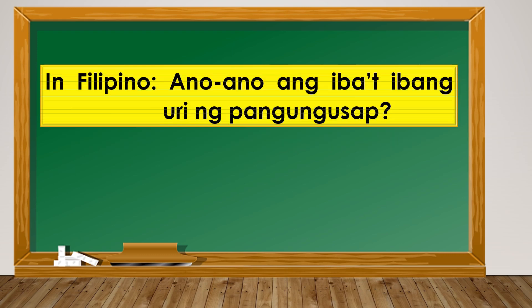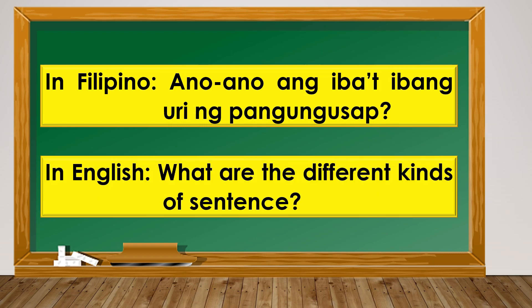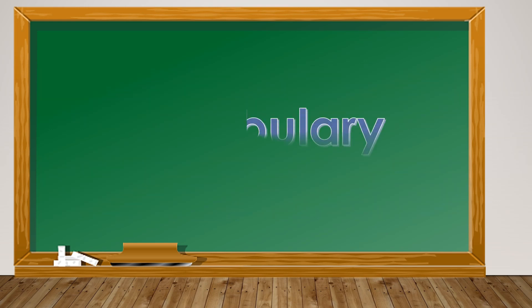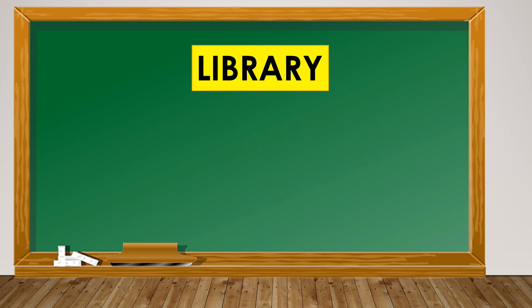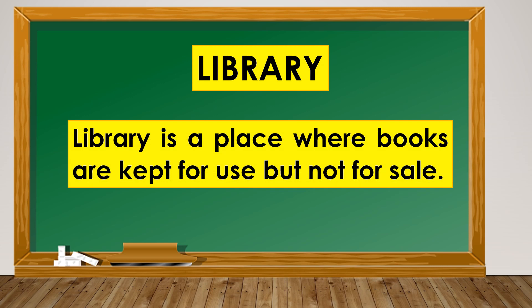In Filipino, ano-ano ang iba't-ibang uri ng pangungusap. In English, what are the different kinds of sentences? Let us sharpen our vocabulary. Our vocabulary for this episode is 'Library.' Library is a place where books are kept for use but not for sale.